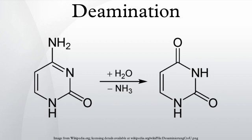Deamination reactions in DNA — cytosine: Spontaneous deamination is the hydrolysis reaction of cytosine into uracil, releasing ammonia in the process. This can occur in vitro through the use of bisulfite, which converts cytosine but not 5-methylcytosine. This property has allowed researchers to sequence methylated DNA to distinguish non-methylated cytosine from methylated cytosine.